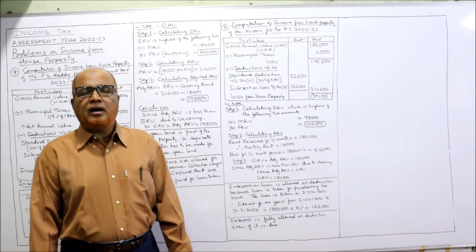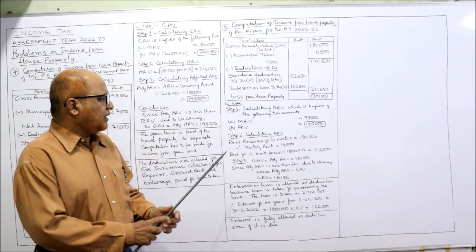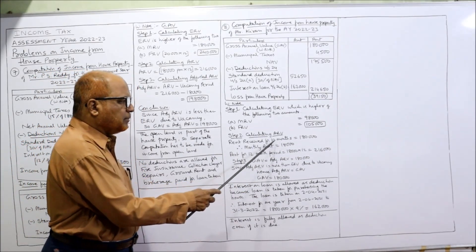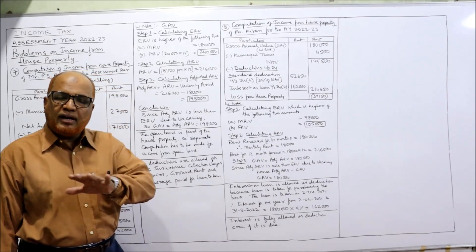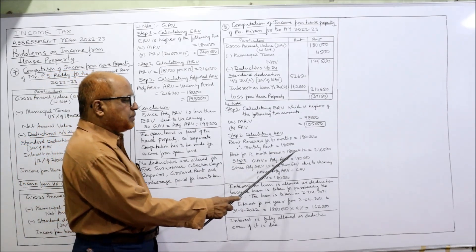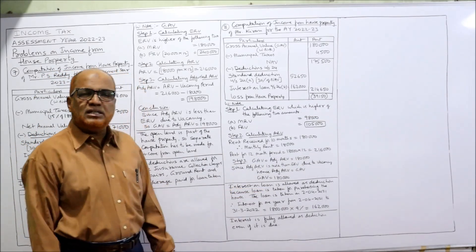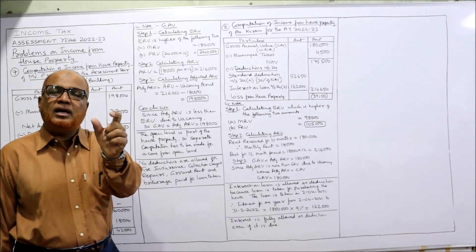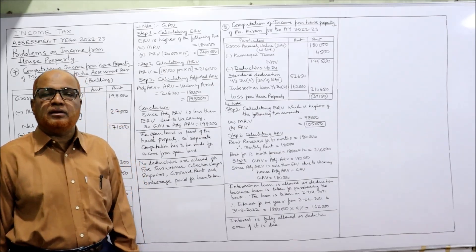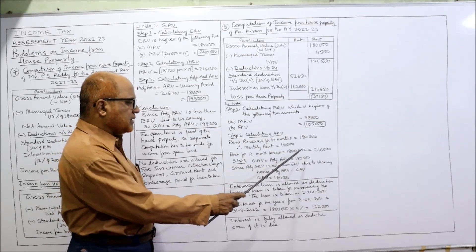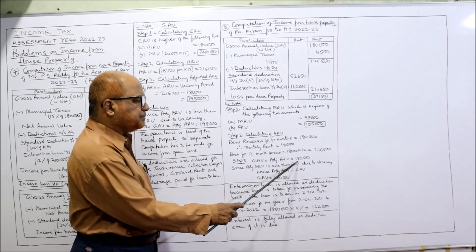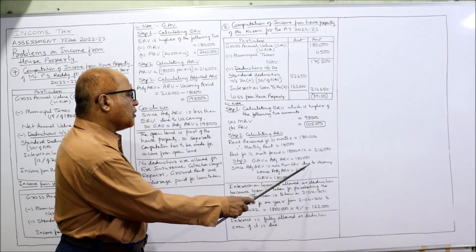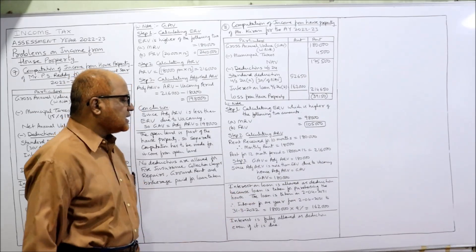Step two: ARV calculation. Rent received for 10 months = 1,80,000, so monthly rent = 1,80,000 ÷ 10 = 18,000. Rent for full year: 18,000 × 12 = 2,16,000. Adjusted ARV = ARV minus rent of vacancy period (2 months): 2,16,000 − 36,000 = 1,80,000. Since adjusted ARV is more than ERV (1,80,000 > 1,05,000), the higher value should be taken as GAV — that is, 1,80,000 is the GAV.